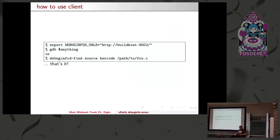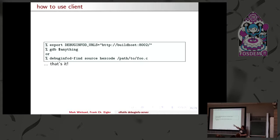The client is even simpler. If you have support like in GDB - well, it's not integrated yet, but I will demo it anyway - you just set an environment variable. We have a little example program 'debuginfod-find': give me the source, debug info, or executable for this hex build ID. That's it.